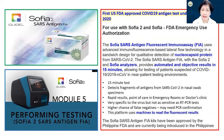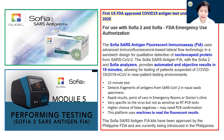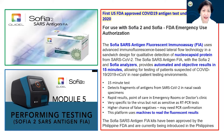The Sofia SARS Antigen Fluorescent Immunoassay was the first US FDA-approved COVID-19 antigen test under Emergency Use Authorization — approved May 9, 2020. It uses advanced immunofluorescence-based lateral flow technology in a sandwich design for qualitative detection of the nucleocapsid protein. It requires the Sofia analyzer — an automated device — and provides objective results in just 15 minutes, but you do need the machine to read the fluorescence.